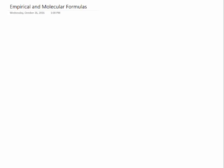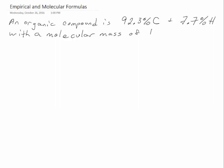This is a new question for CHEM 1211, an empirical and molecular formula question. If an organic compound is 92.3% carbon and 7.7% hydrogen, with a molecular mass of 104 AMU, what is the empirical formula and the molecular formula of the unknown compound?